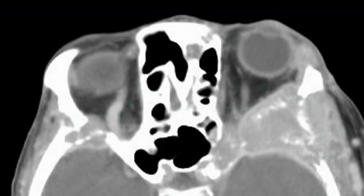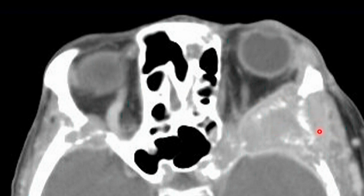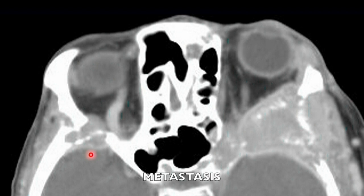This is a huge lesion centered not within the orbit itself, but within the triangle of bone behind the orbit — the sphenoid buttress. This is a bone lesion secondarily involving the orbit, temporalis fossa, and middle cranial fossa, expanding in all directions. If you look carefully, you'll see a somewhat smaller counterpart on the other side. This is metastatic disease — in this case breast cancer — but metastatic disease from any source to bone could produce this appearance.